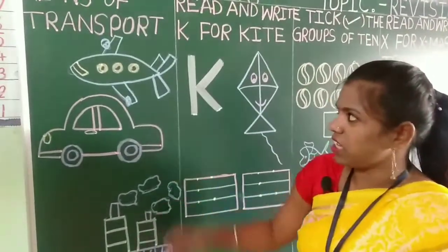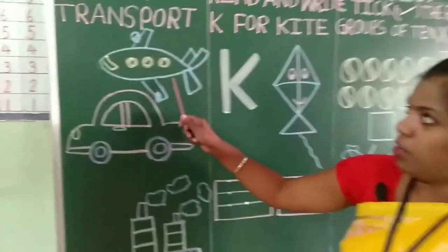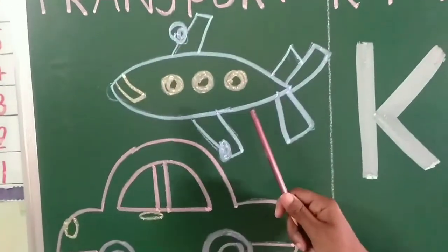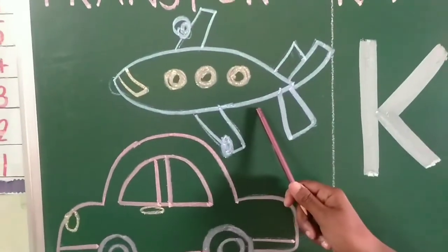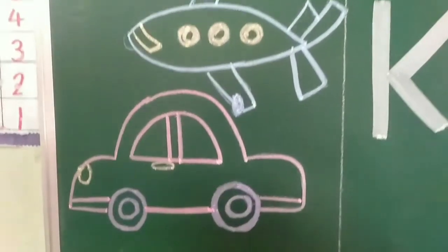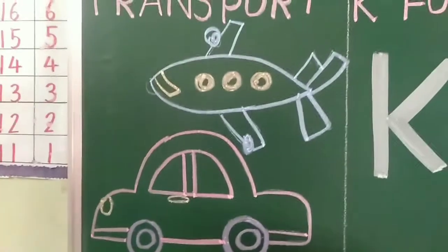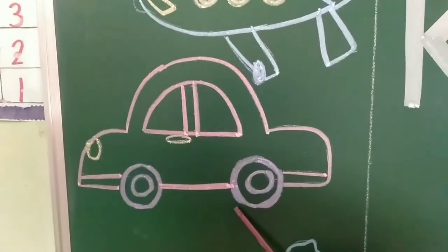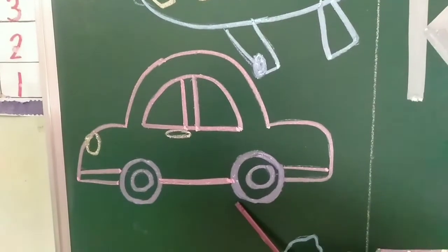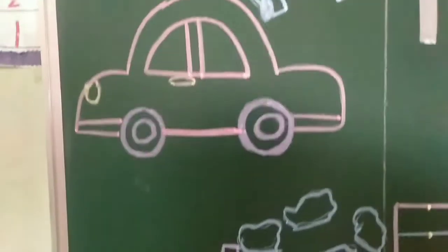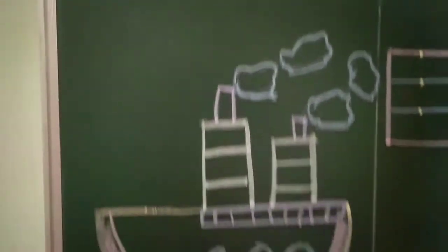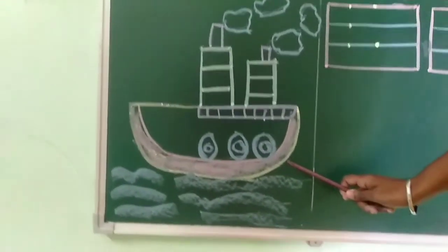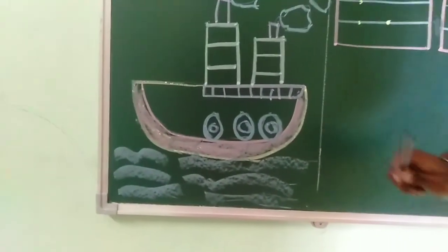Once again you can see here. What is this? Aeroplane. Aeroplane flies in the air. This is a car. Car runs on the road. And this is a ship. Ship runs on the water.